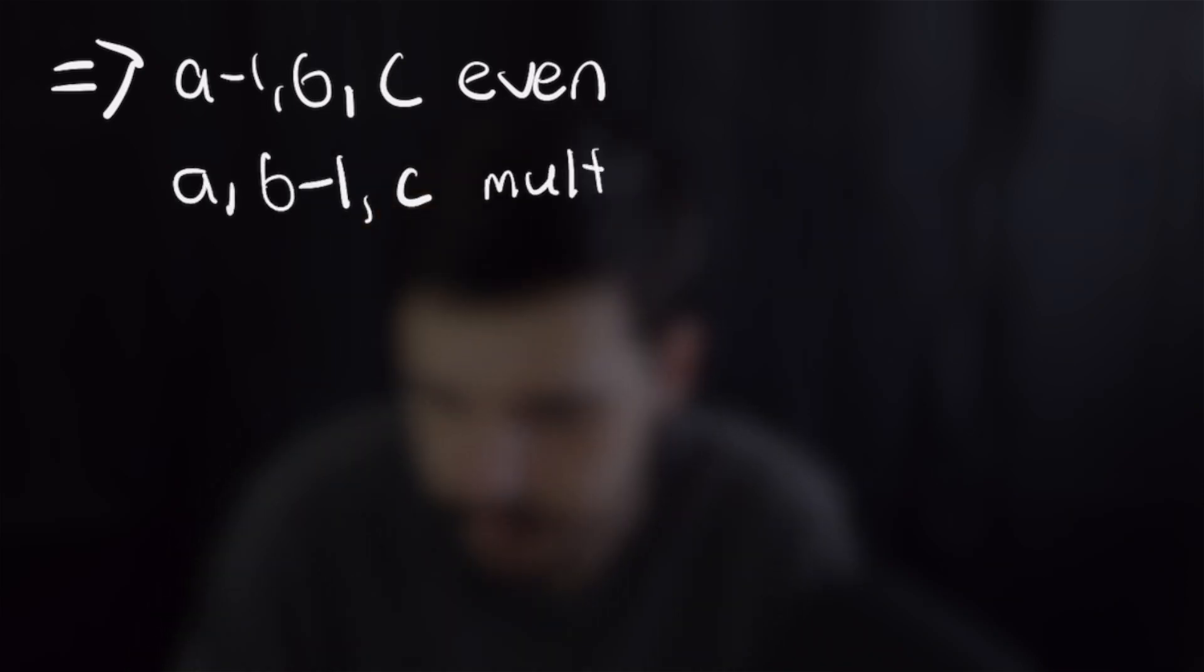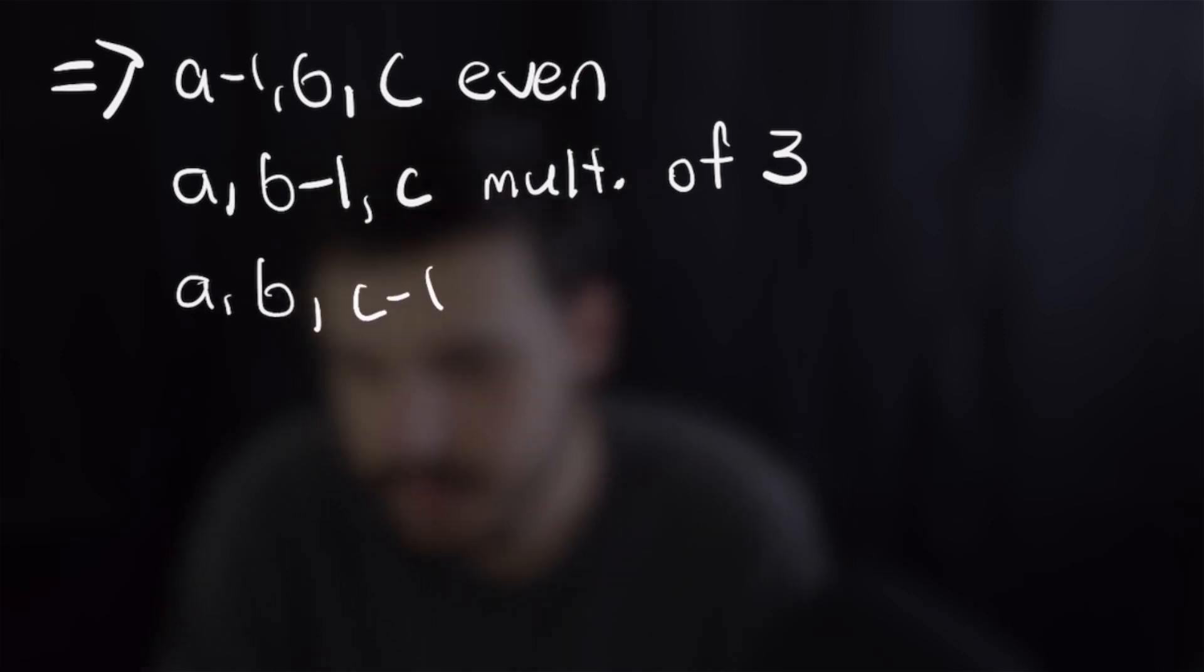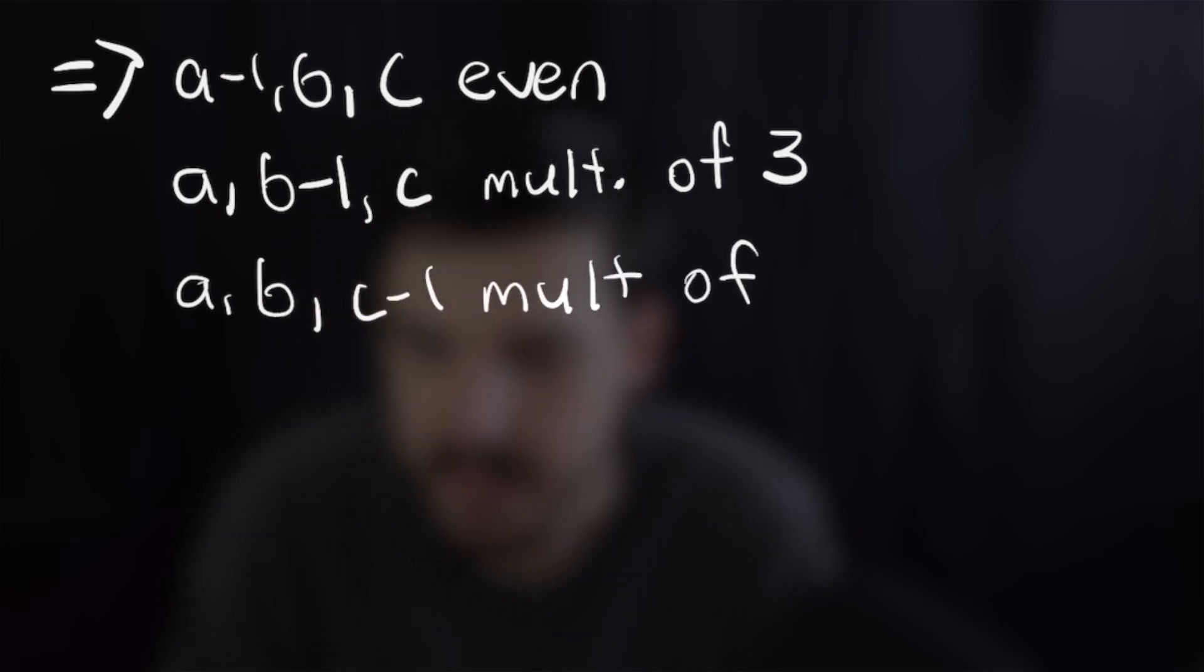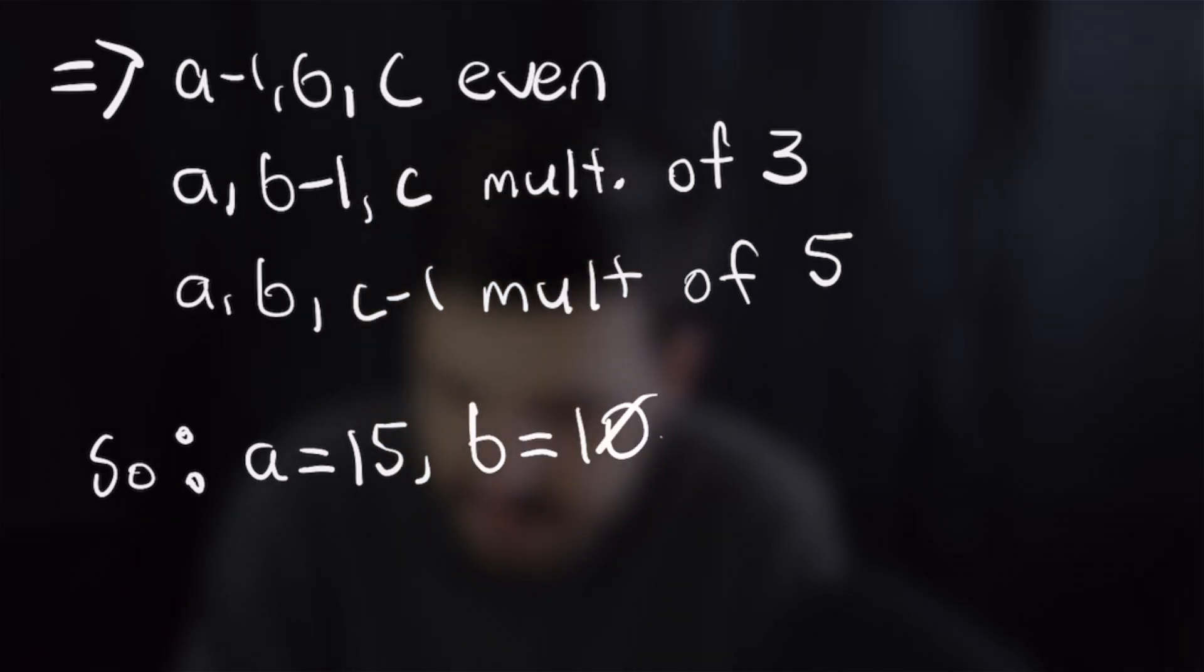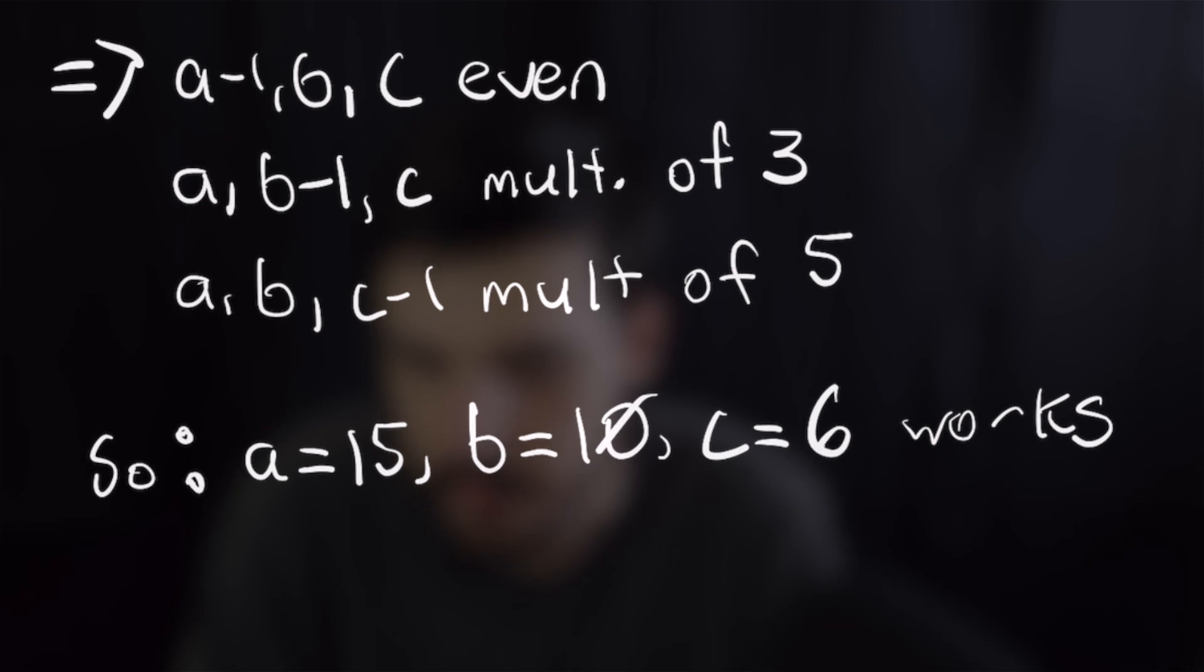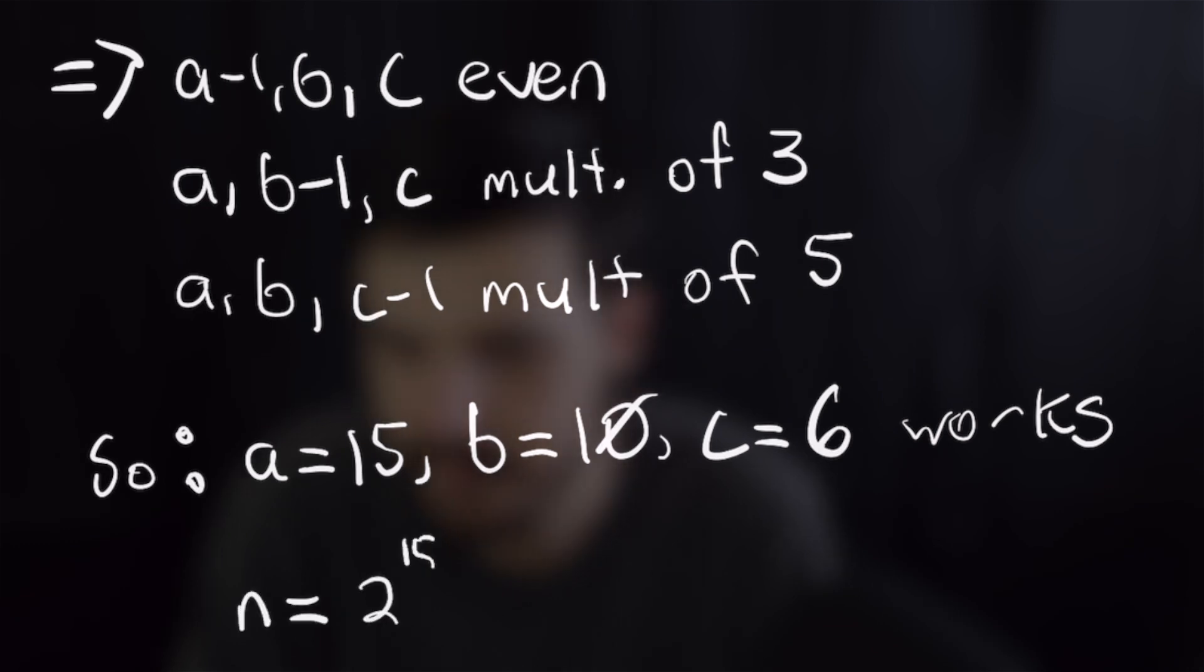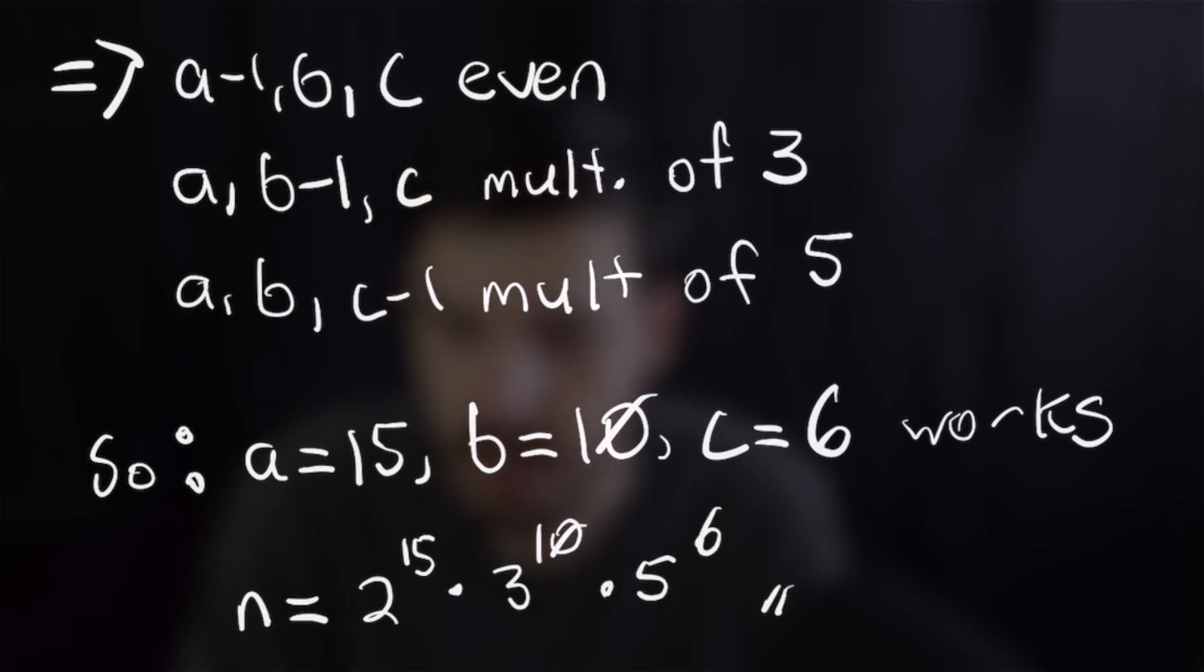Now from here we can deduce a bunch of rules that will lead us directly to our answer and that is that a minus 1, b and c must be even. A, b minus 1 and c must be multiples of 3. And a, b and c minus 1 must be multiples of 5. From here it is pretty easy if we manage to follow all these rules to come up with an example and that is going to be when a is equal to 15, b is equal to 10 and c is equal to 6. And plugging that into our definition for n we will find that n is equal to 2 to the 15th times 3 to the 10th times 5 to the 6th which finishes this one off.